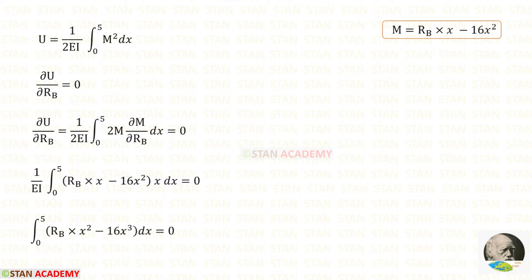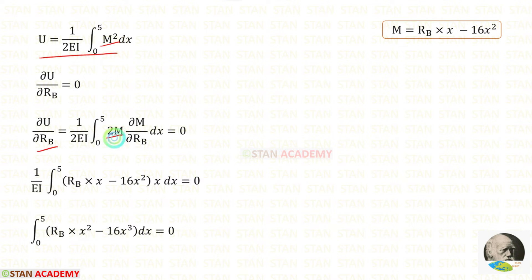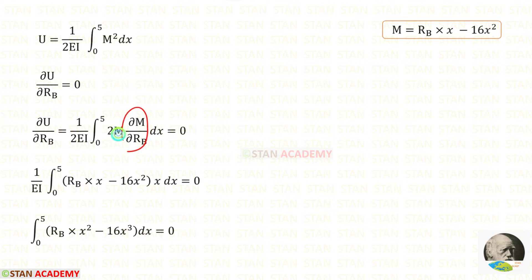Now let us apply Castigliano's second theorem. We know that at point B there is a vertical support, so the deflection will be 0. When we partially differentiate the strain energy U with respect to RB, we get 0. When we differentiate M squared we get 2M. Inside M we have RB, so we again partially differentiate M with respect to RB. We can eliminate the common factors, and then apply M.